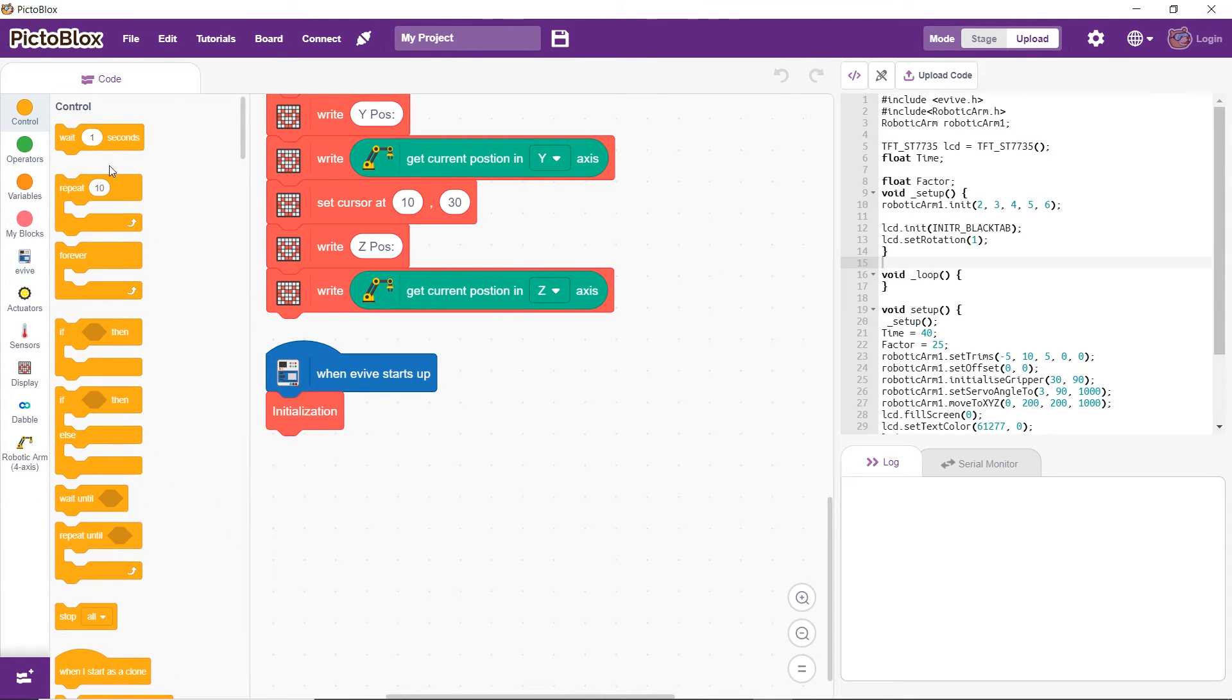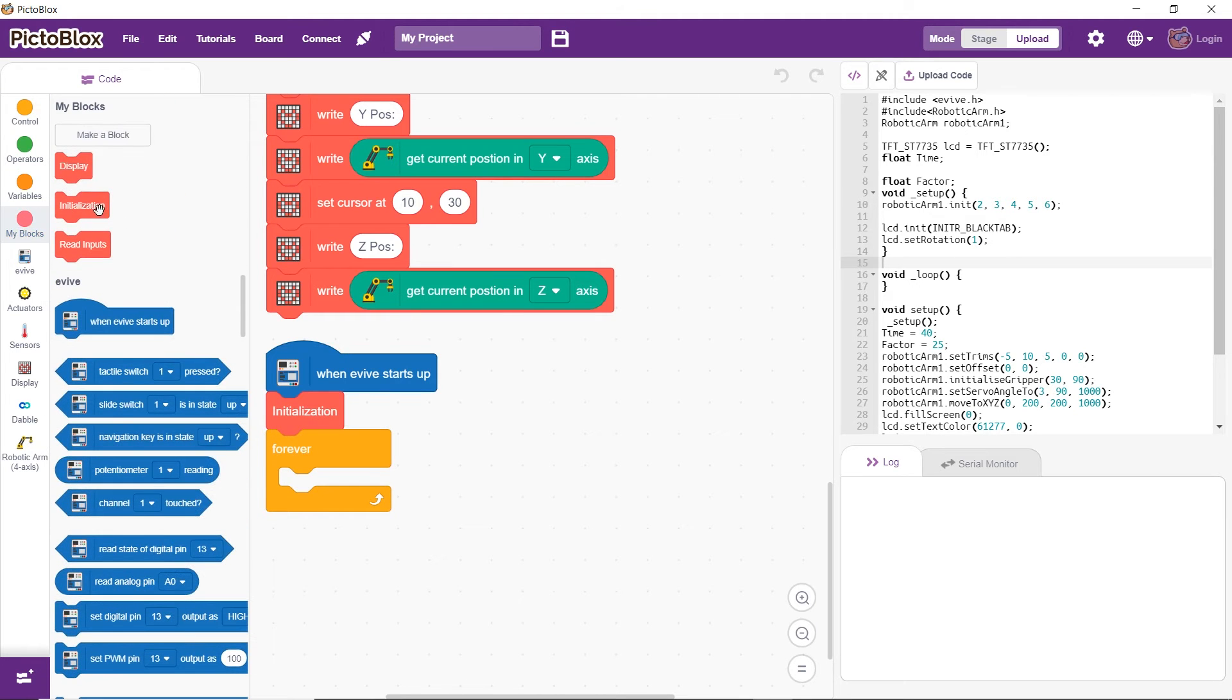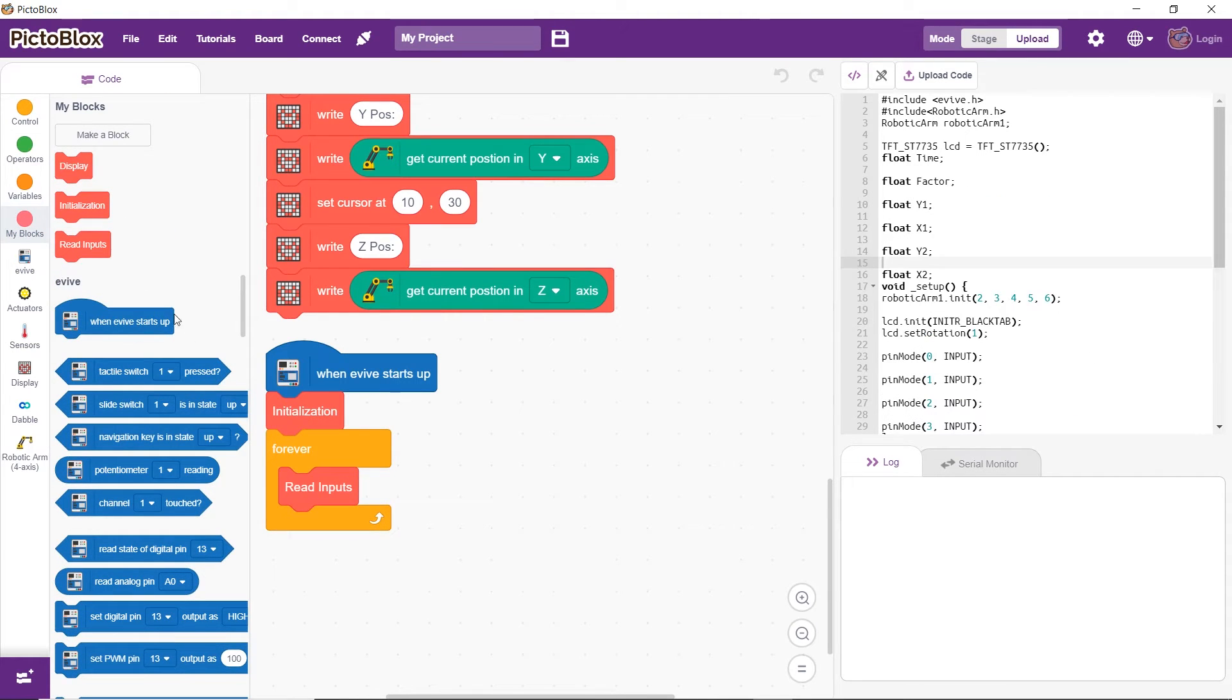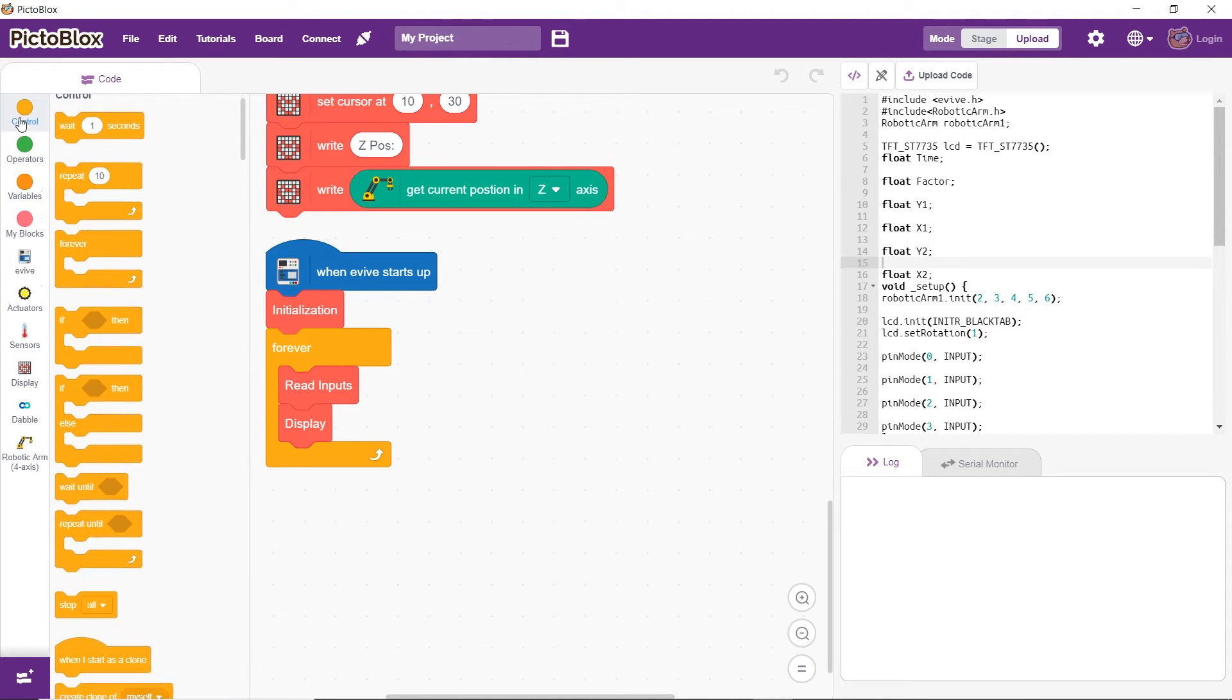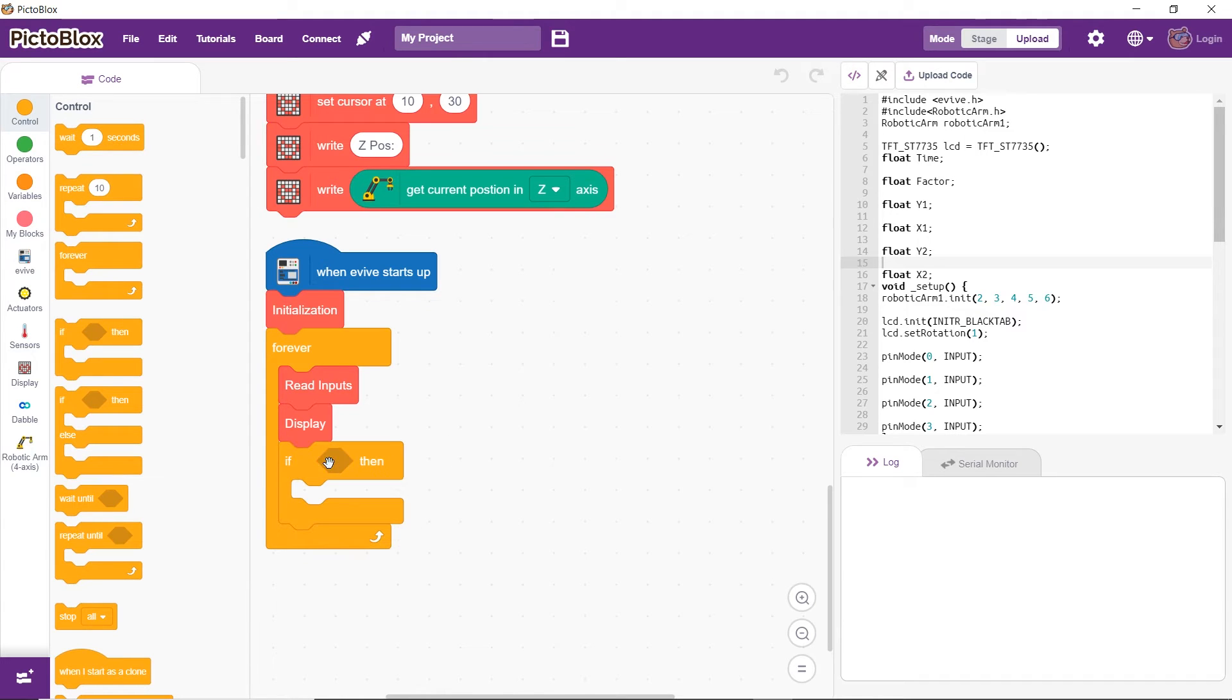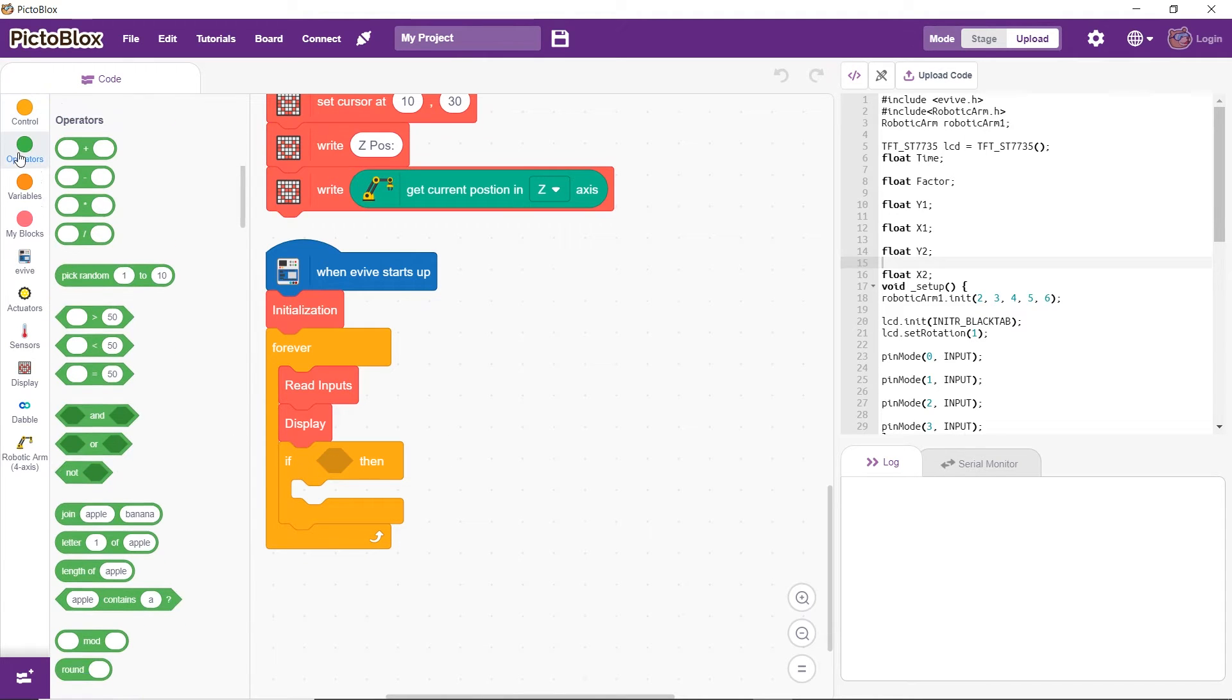Next, drag and drop the forever block to run the code continuously. Then, drag and drop the read inputs and display blocks. Each time the forever block is executed, the inputs will be displayed. Next, add an if block for checking the values and controlling the arm.